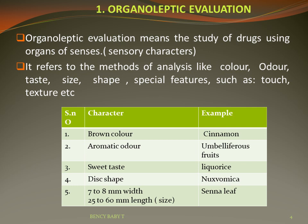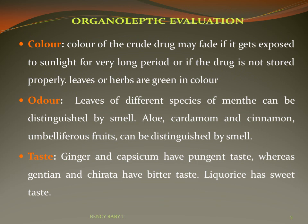Organoleptic parameters include color, odor, taste, size, and shape. Color fades if exposed to sunlight for a long period, so drying under shade is preferable for drugs containing thermolabile substances. Leaves of different species of Mentha can be distinguished by smell, as can aloe, cardamom, cinnamon, and umbelliferous fruits. In case of ginger and capsicum, the taste is pungent, whereas ginseng and Chirata have bitter taste. Licorice has a sweet taste.